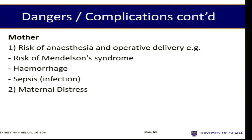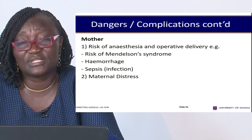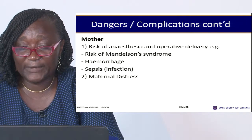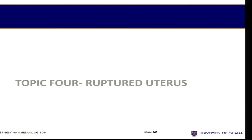For the mother, because intervention may be needed, she is at risk of anaesthesia complications such as Mendelssohn's syndrome — where the woman inhales her own vomit and dies. She can have haemorrhage, sepsis or infection, and maternal distress. Both the mother and fetus can be in distress, and these are all obstetric emergencies that must be prevented.